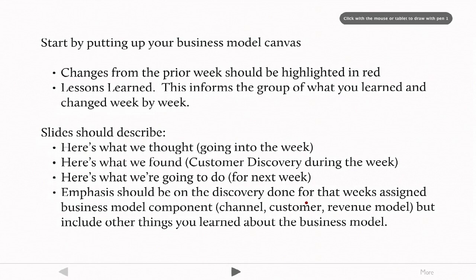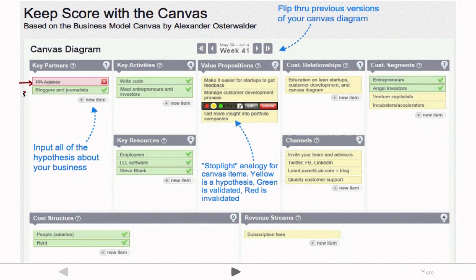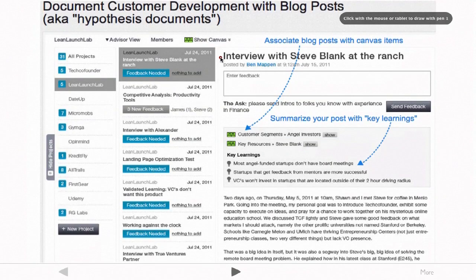Emphasis should be on the component of the business model we've been talking about in class — if that week we covered the customer piece or revenue models, then you should try and test that aspect. I'd like you to start with customers and testing whether people will actually want to buy the product. If you use the Lean Launch Lab website you can see the canvas and put in your hypotheses about key partners, value propositions, cost structure, and channels. You can record your progress week by week, and the teaching team can also see your updates.